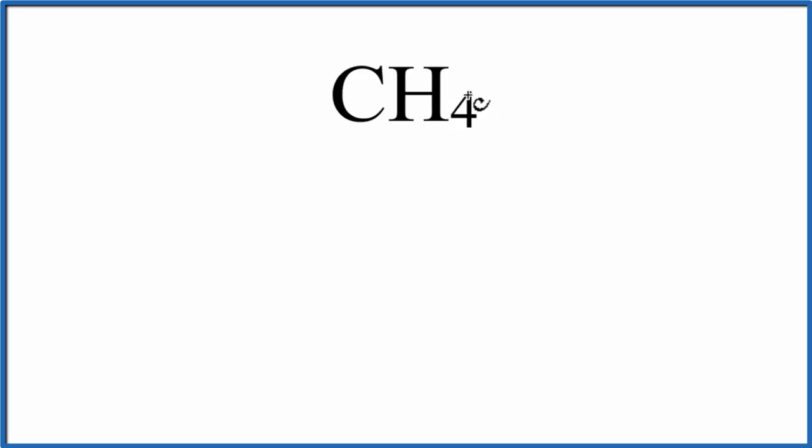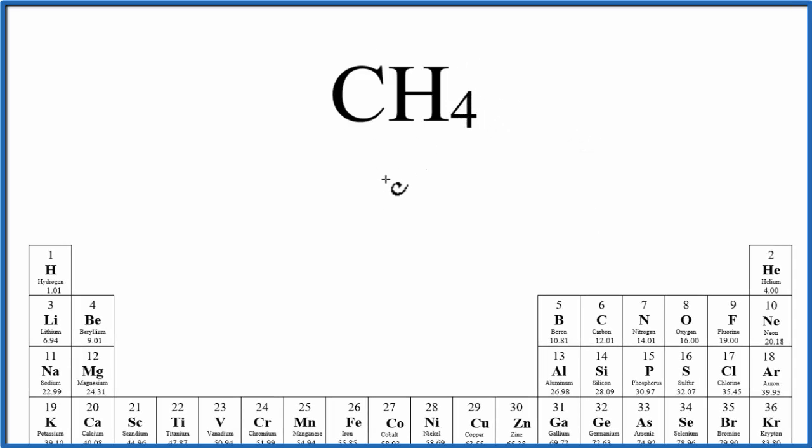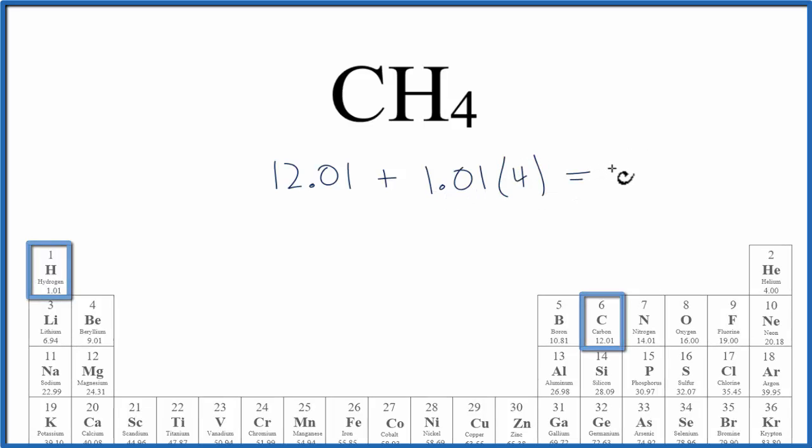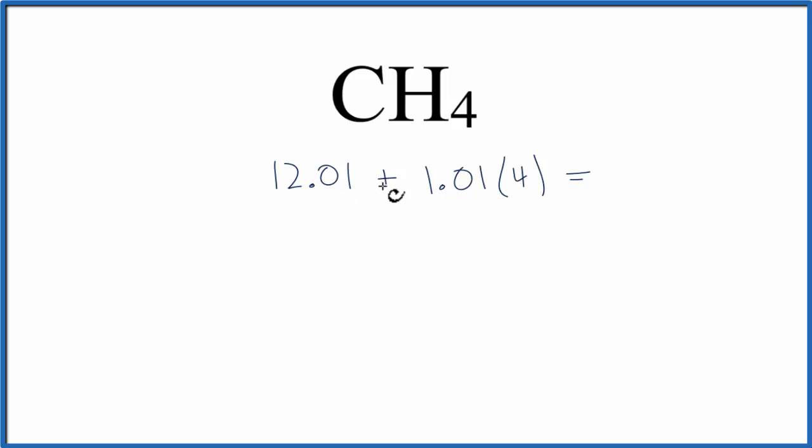For CH₄, methane, we'll go to the periodic table. Carbon, that's 12.01 grams per mole, plus hydrogen is 1.01 grams per mole, and we have four hydrogen. So we'll multiply that 1.01 times 4. When we do that, we have 12.01 plus 4.04, and we end up with a molar mass for CH₄ of 16.05 grams per mole.